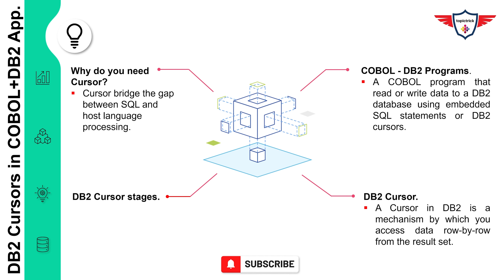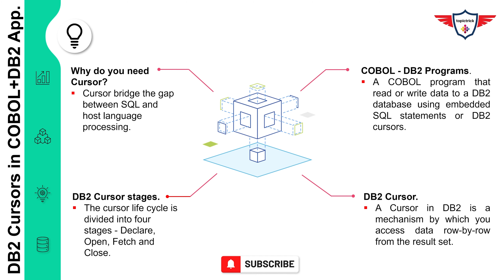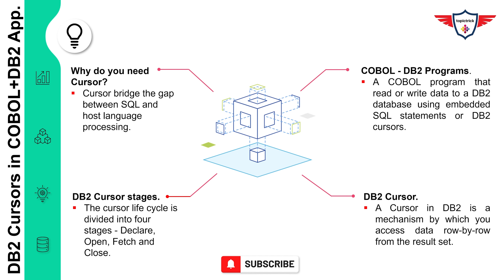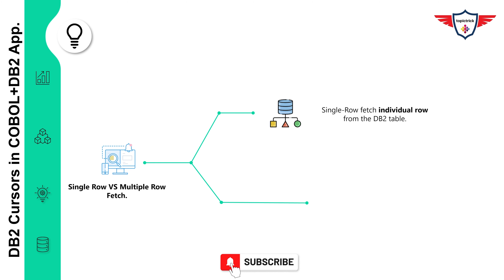Before moving to single row versus multi-row fetch, let's talk about the DB2 cursor lifecycle stages. The entire lifecycle is divided into four stages: declare, open, fetch, and close. All four stages must be defined in your COBOL program to perform any operation on data stored in the database. For more detail on each cursor stage, refer to the previous video linked in the description and in the top right corner of the screen.